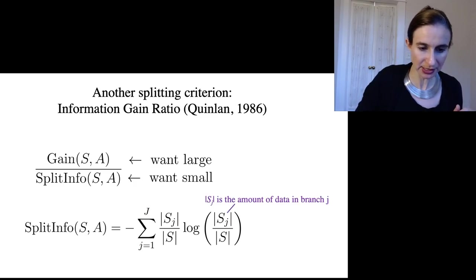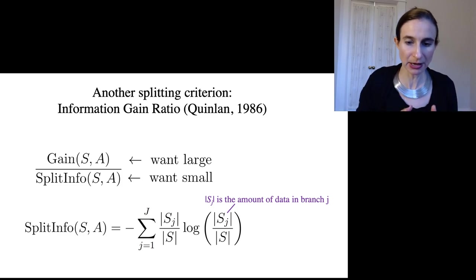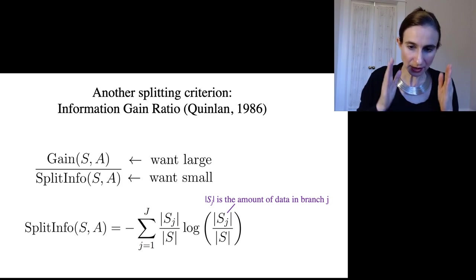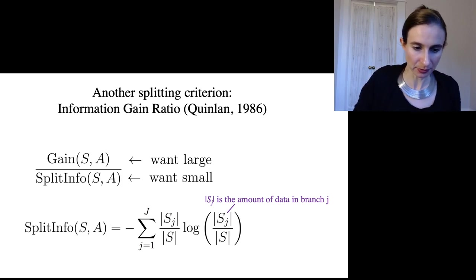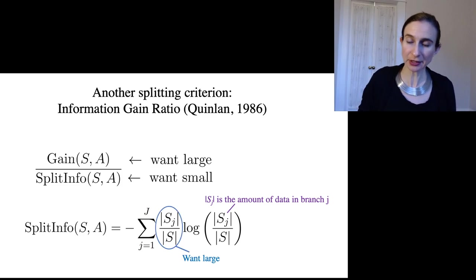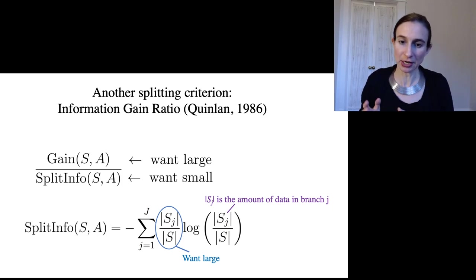This is the size of Sj right there, that's the amount of data that goes into a branch, and we want that amount to be large in each of the branches. In particular, we want this ratio. This is the fraction of points that go into branch j. We want each of those ratios to be large, so that the branches just don't split too much.